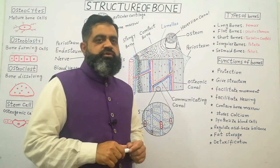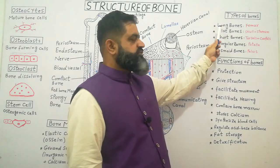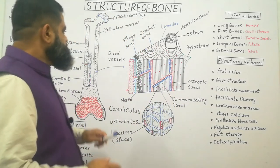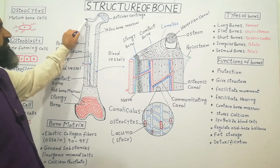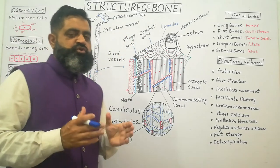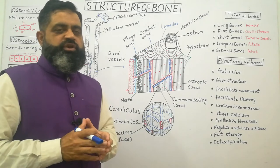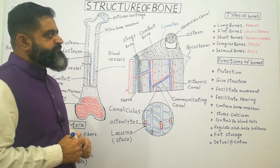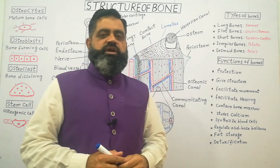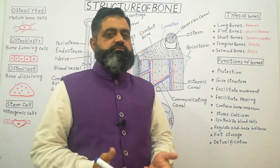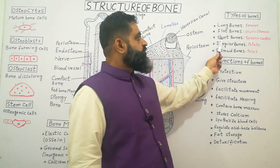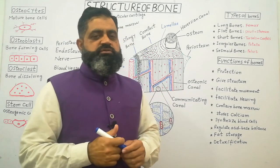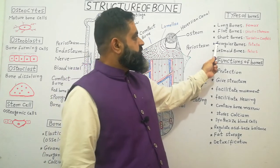There are five types of bones. Long bones include the femur, radius, and ulna; they have a long shaft with two ends covered by articular cartilage, which protects bones from friction during movement. The second type is flat bones, which are present in the skull and help protect the brain. The third type is short bones, present in the ankle and wrist.